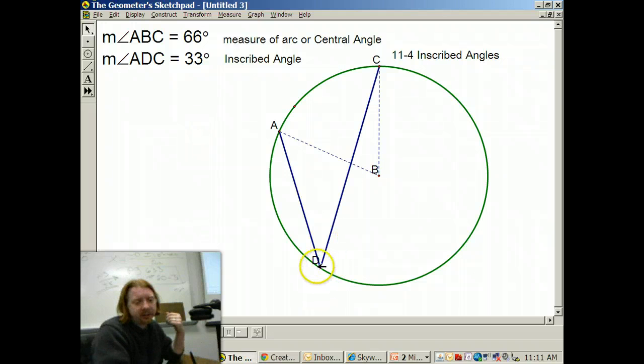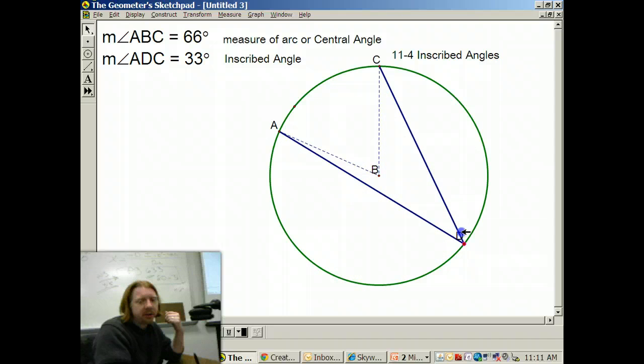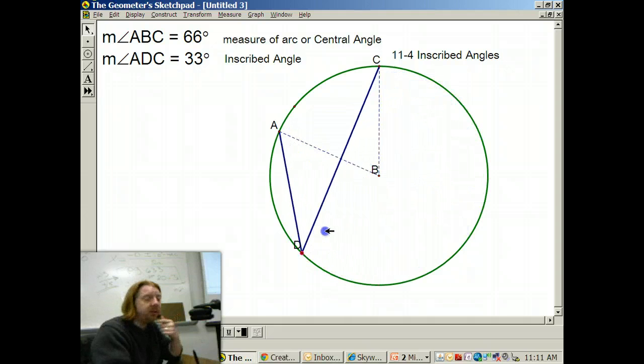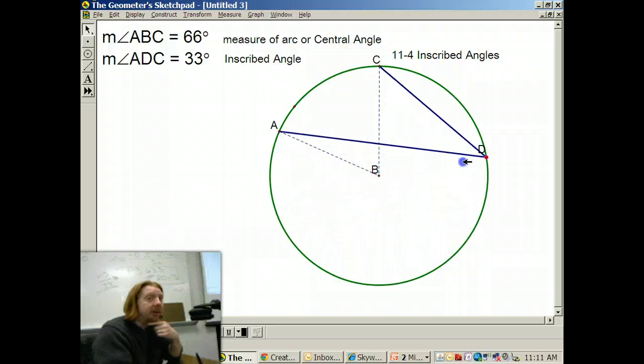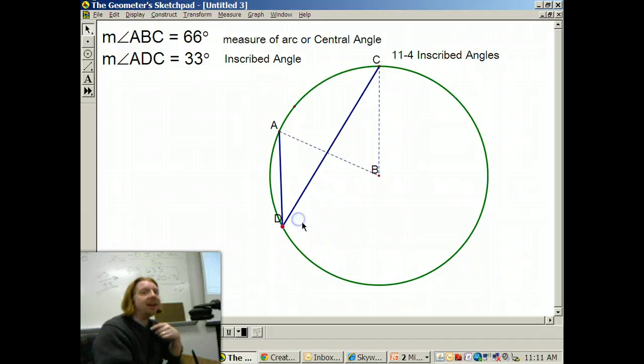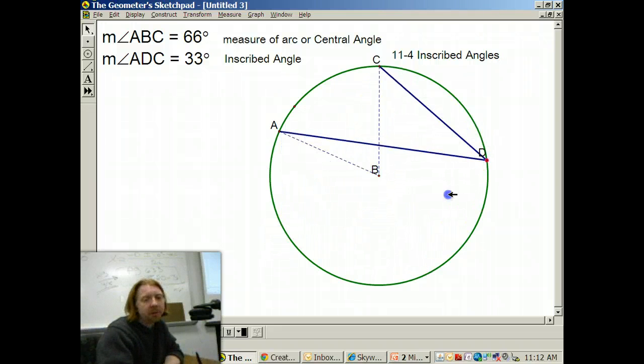Now, here's what's kind of neat. If I take D and I move it, notice the effected change in the inscribed angle. What are you seeing, Jake? Jacob, what's happening as I change the inscribed angle? As I move D, how does the measure of ADC change? Yeah, exactly. Nothing happens. The inscribed angle is fixed at 33 degrees. No matter where I put D, it's always going to be 33 degrees.